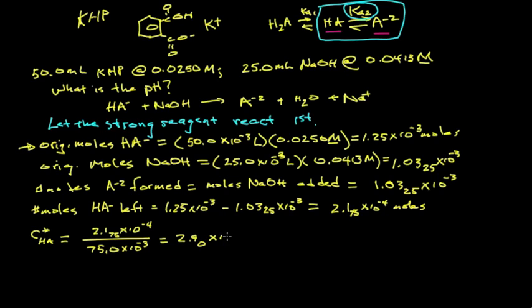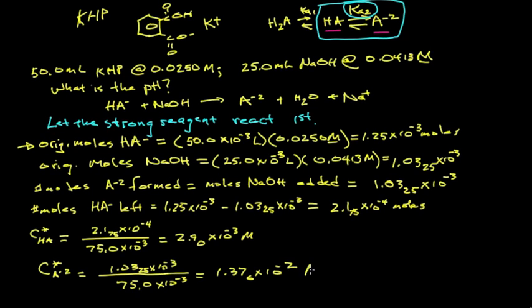The analytical concentration of the conjugate base, the dianion in this case, equals 1.03 times 10 to the minus 3 moles divided by 75 milliliters. Numerically, that works out to 1.376 times 10 to the minus 2 molar.